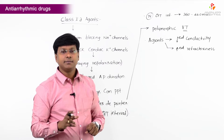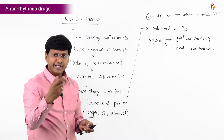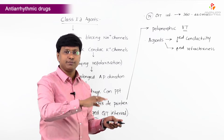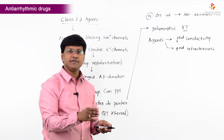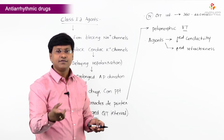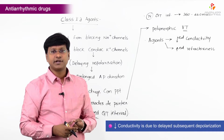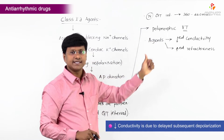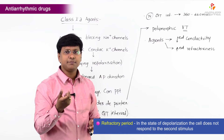There is decreased conductivity because the action potential duration is prolonged. For the next cell to depolarize, the previous cell's action potential duration must be completed. Since the previous cell's action potential duration is increased, the subsequent cell takes a prolonged period to depolarize, causing decreased conductivity.